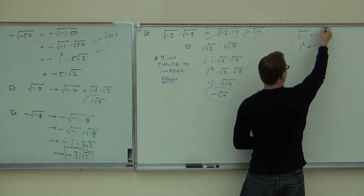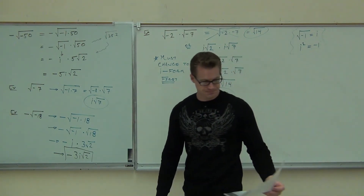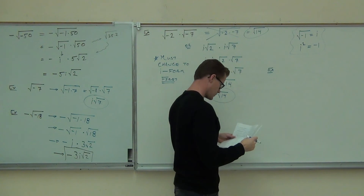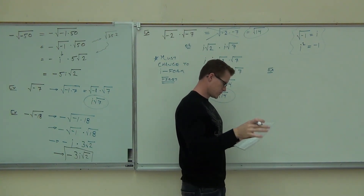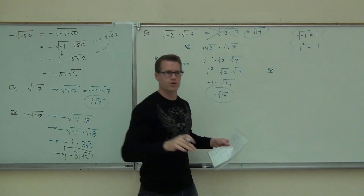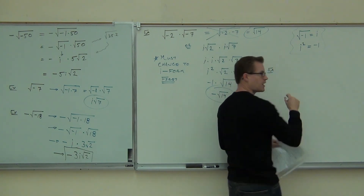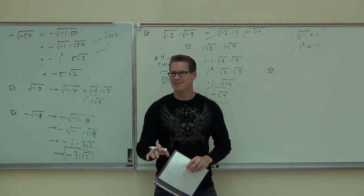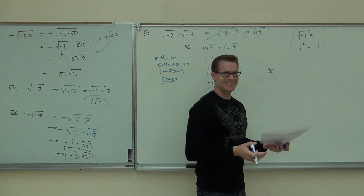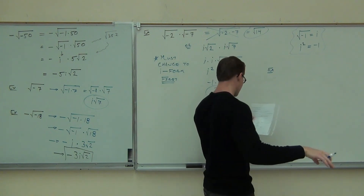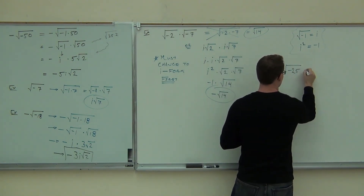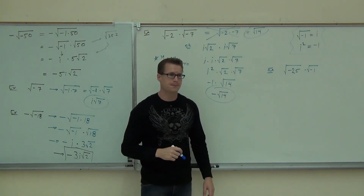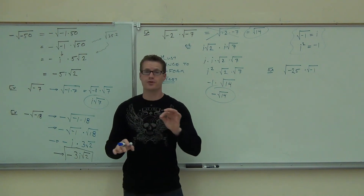This is absolutely crucial — you cannot mess that up. You must identify it every single time you see it. Let's try a few more together. We'll do three more together, give you a couple on your own, then we'll get into complex numbers. I think you will really like the complex numbers. Every time you see a negative square root, you are going to change it to i-form first. That's what I've been saying this whole time.